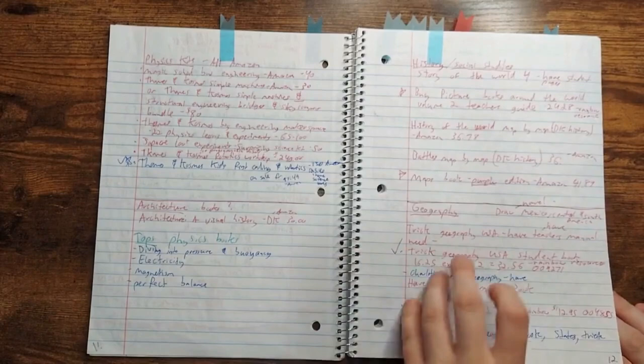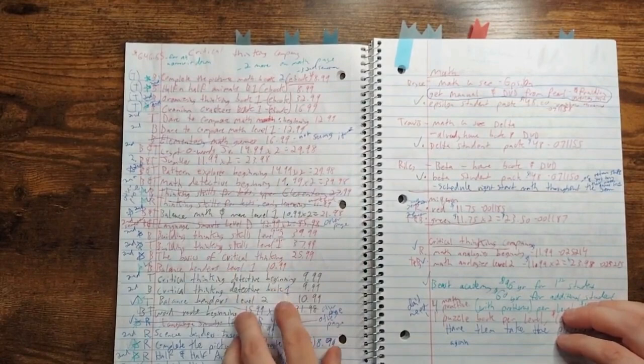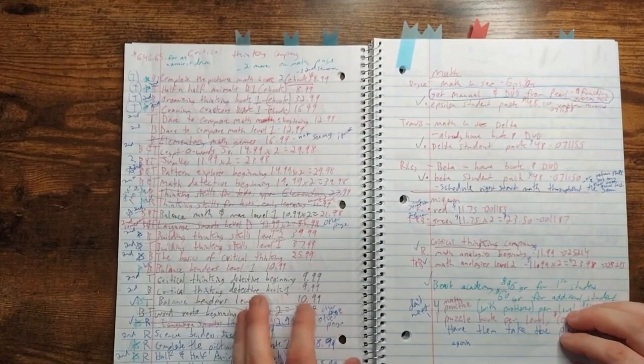And then here's my wish list for Critical Thinking Company. I always get a lot of books from them, but obviously we can't use all these books one semester. So somehow to buy a second semester, or maybe I'll get them next year, or change my mind on them, but this is what I want to use for the next year, year and a half.